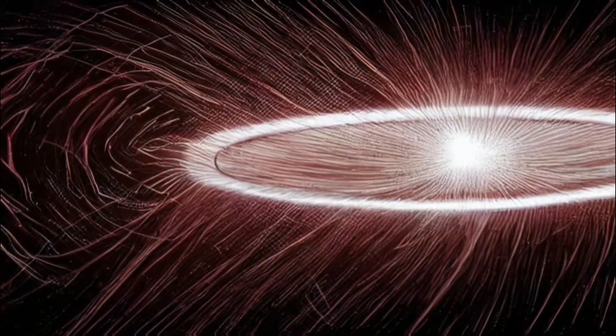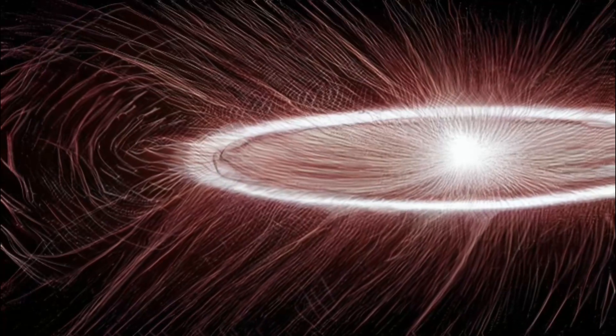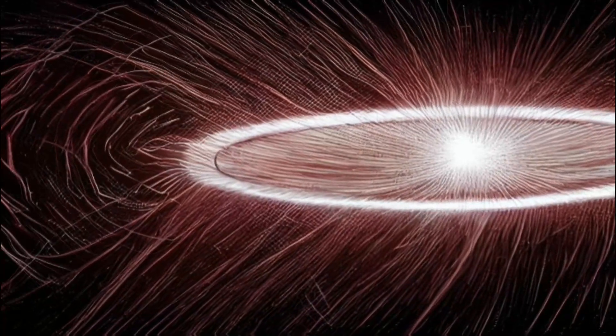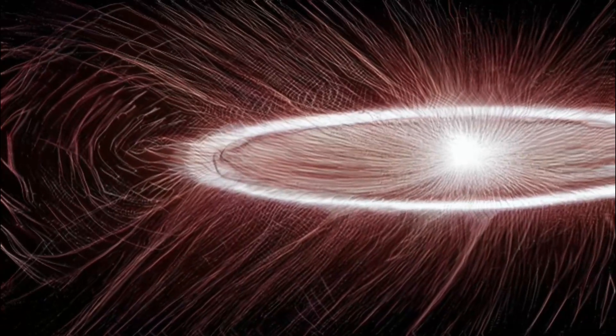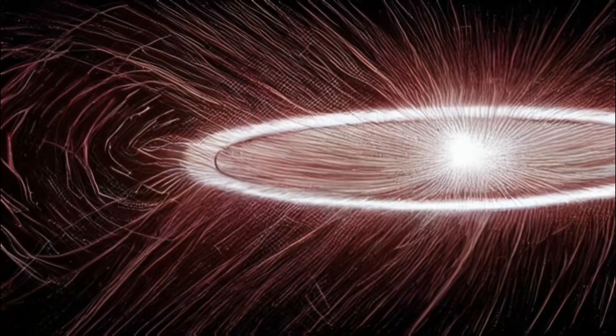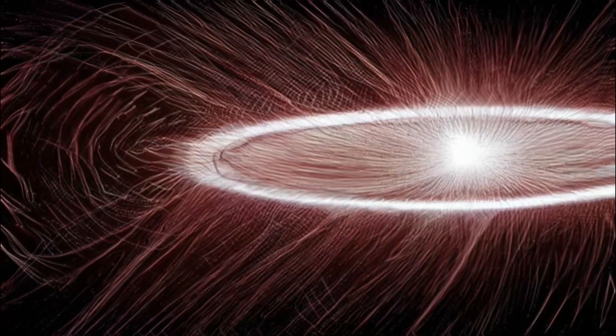A magnetic field surrounds almost every large object in the cosmos. Smaller objects like planets and stars have dynamos inside of them that cause weak magnetic fields to fold over on themselves, creating their own magnetic fields.